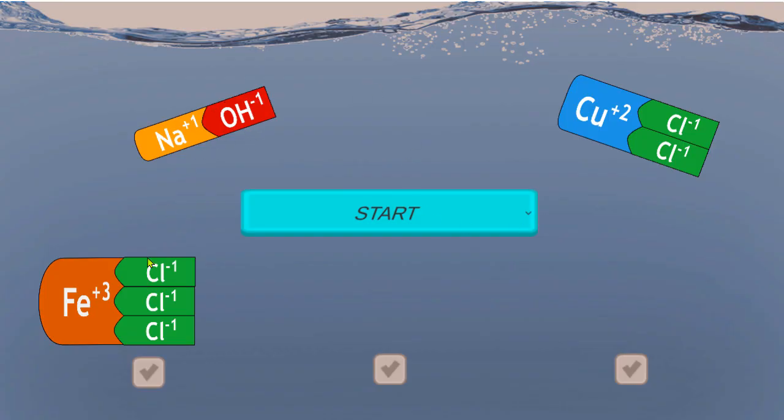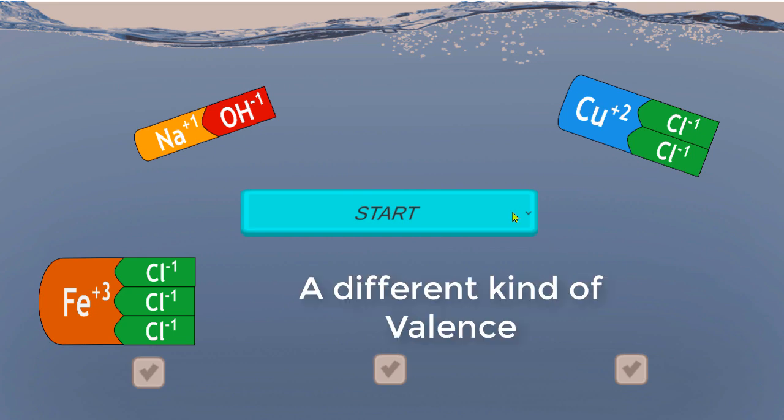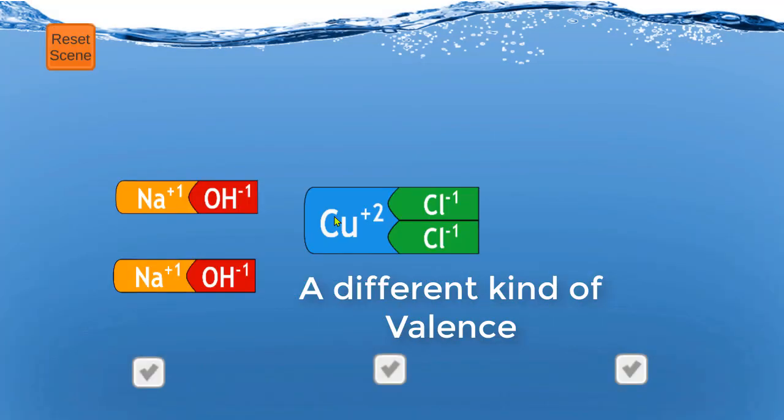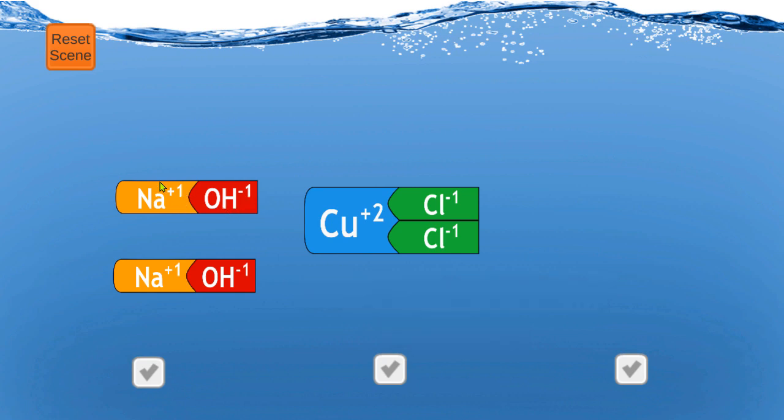Today you'll use models that look like this. They do have valence, but this is a different kind of valence than you've seen before. These are ionic bonds, not covalent bonds.